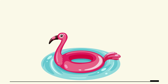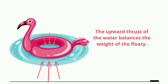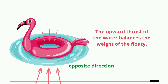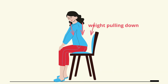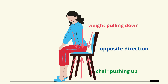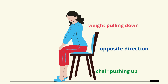Now let's look at the floaty. The upward thrust of the water balances the weight of the floaty, and they are still in opposite directions. For the sitting person, the upward force exerted by the chair and the downward weight of the person are equal and also in opposite directions.